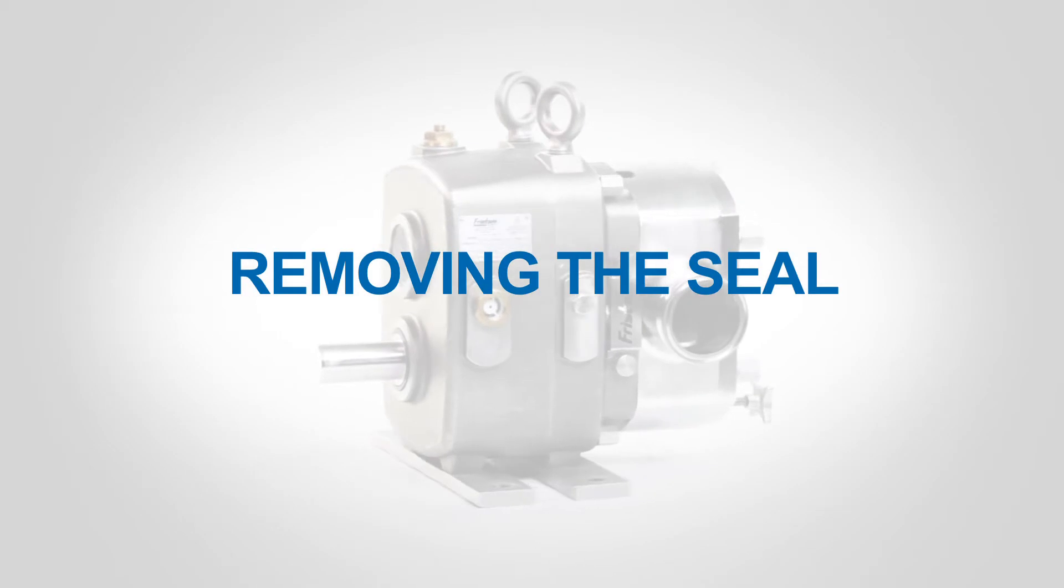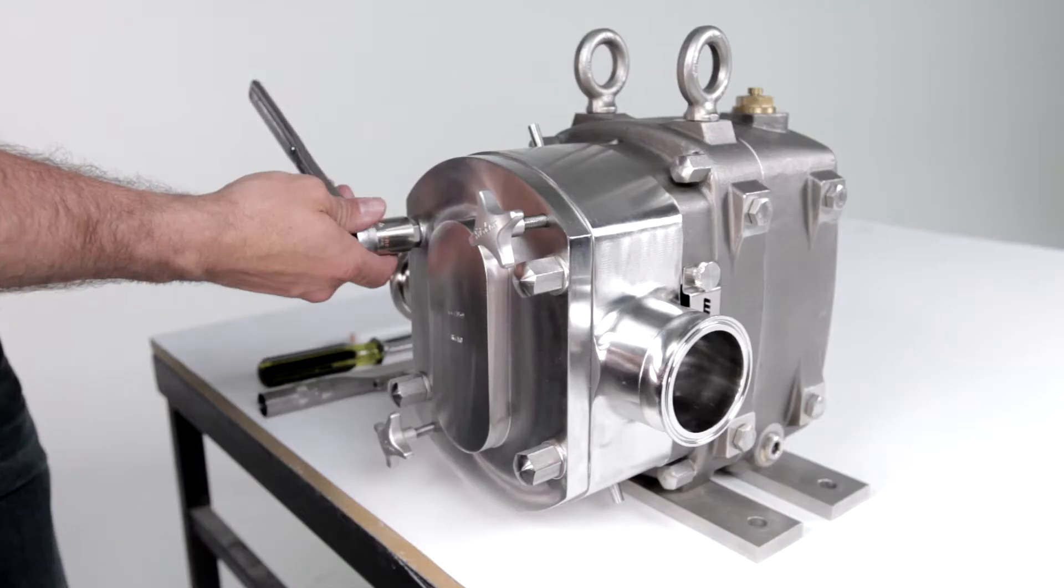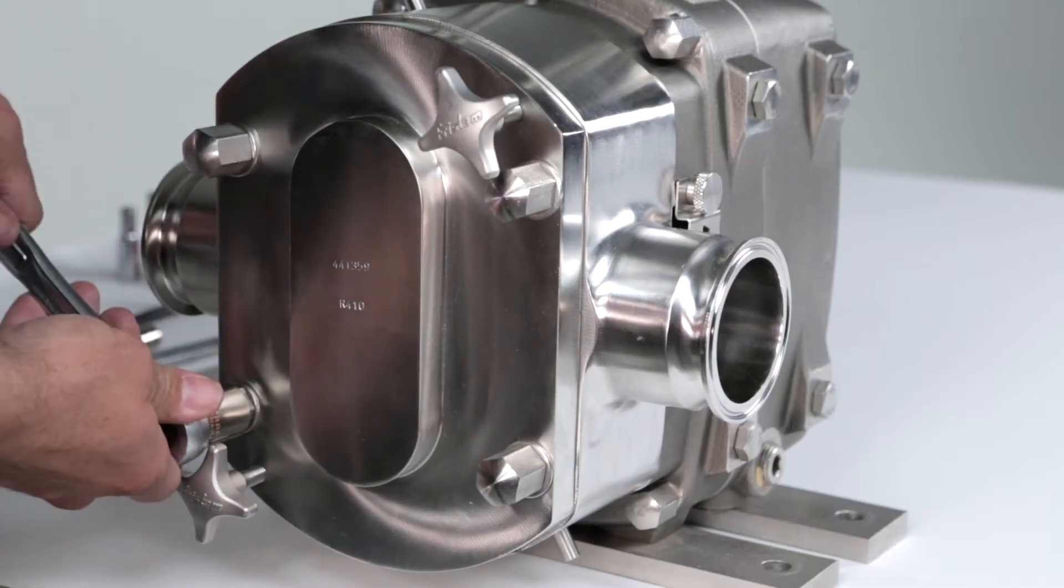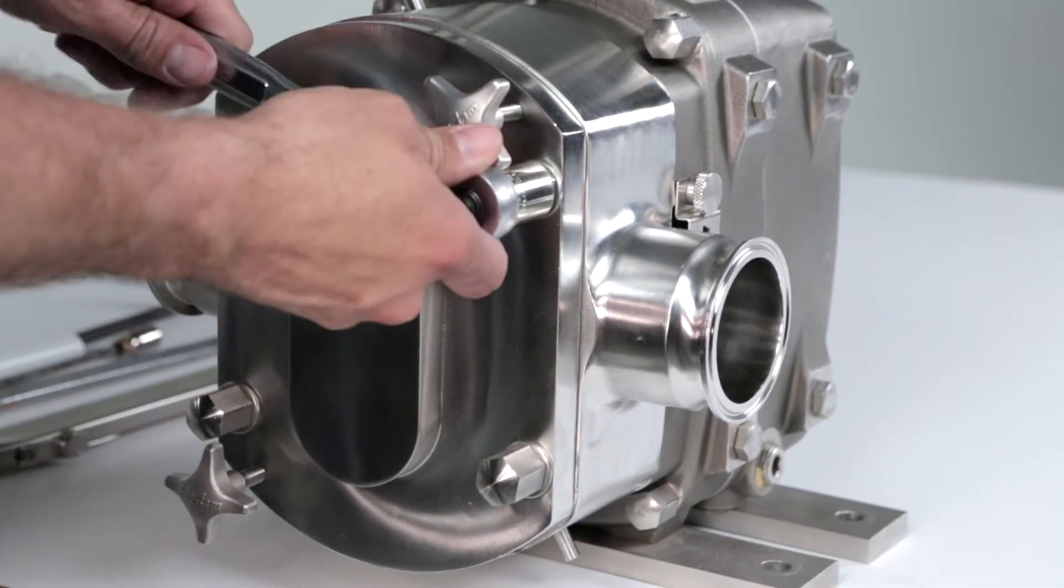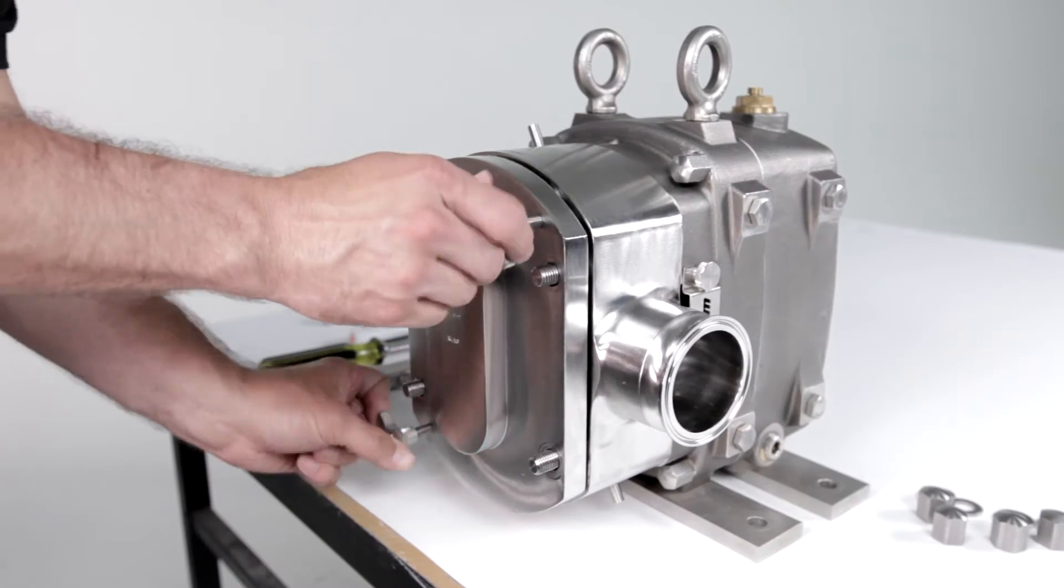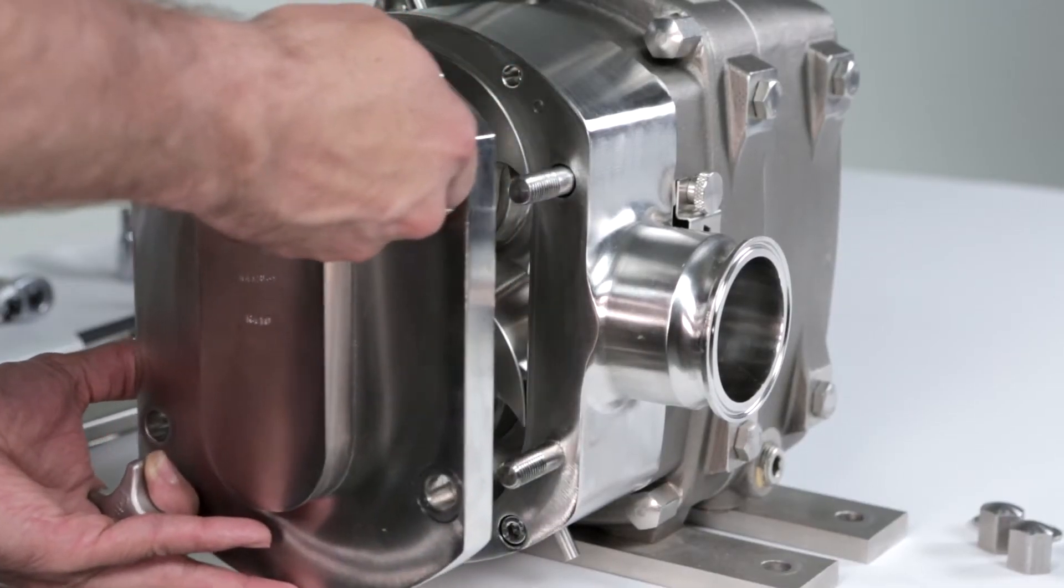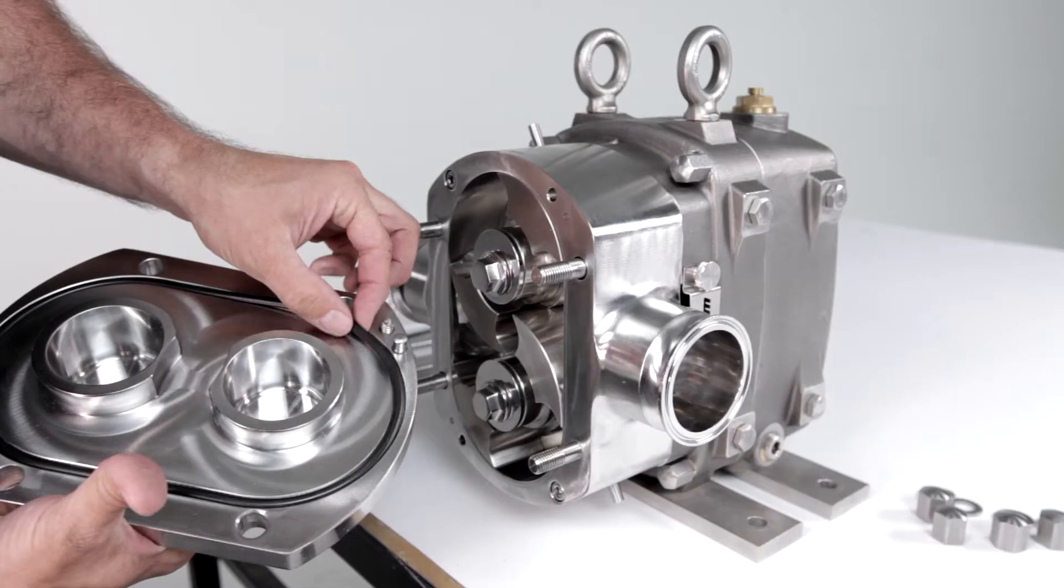Removing the Seal. Remove the cover nuts and washers. Remove the cover by turning the forcing screws clockwise. Remove the cover and discard the cover o-ring.